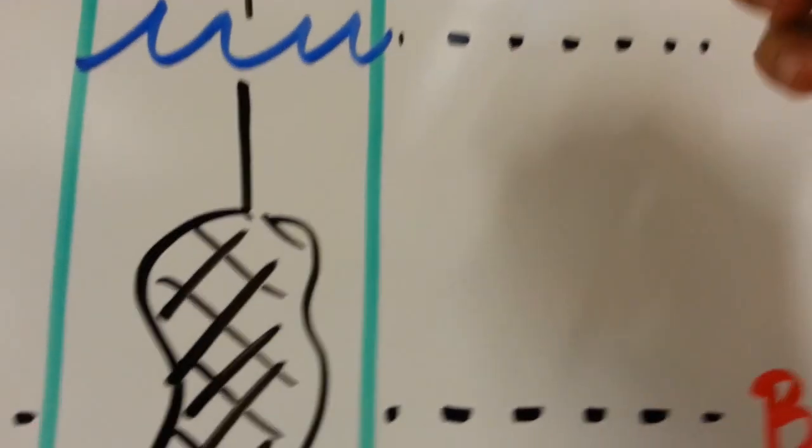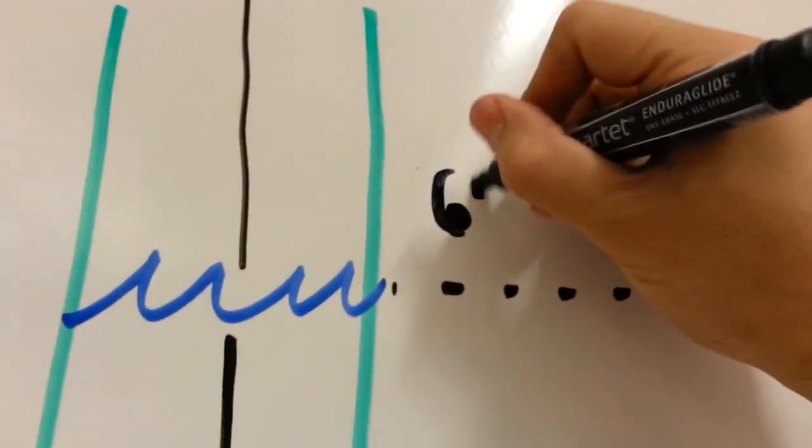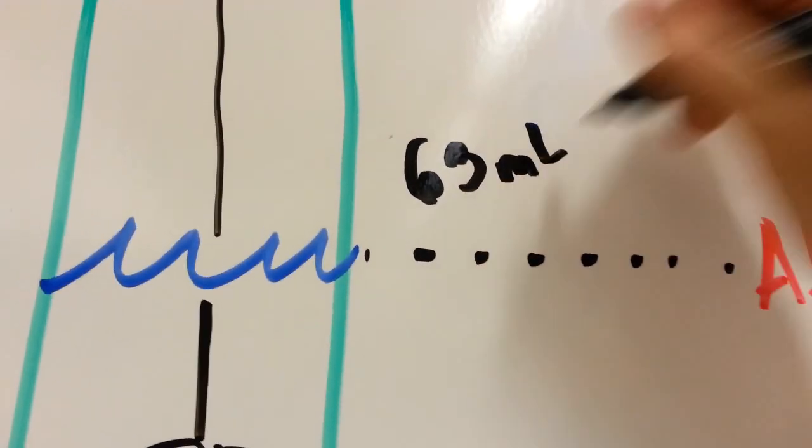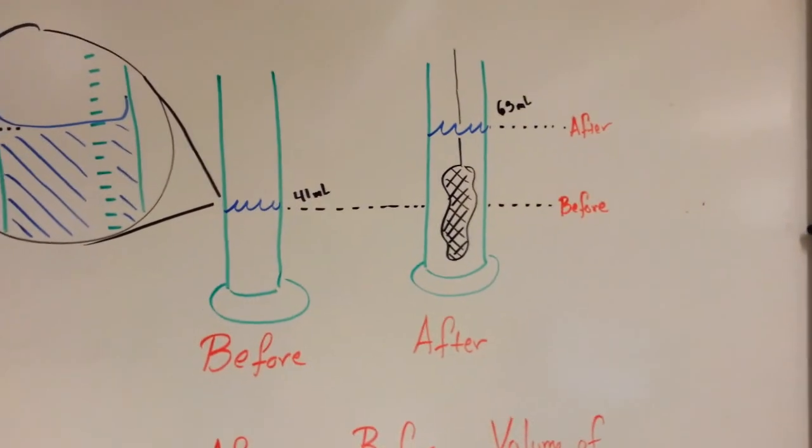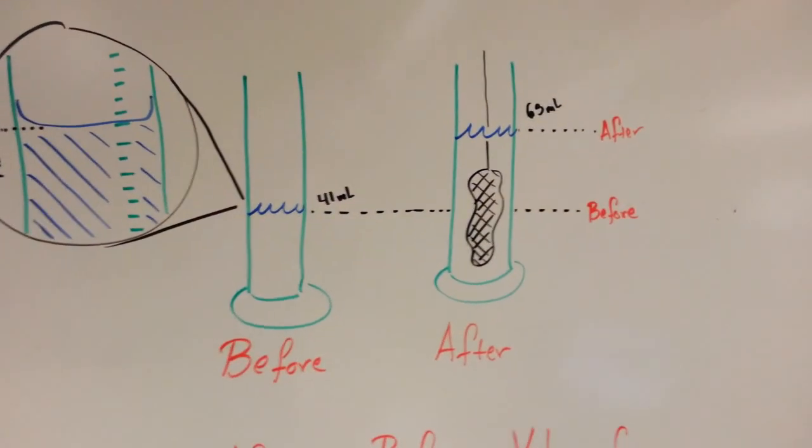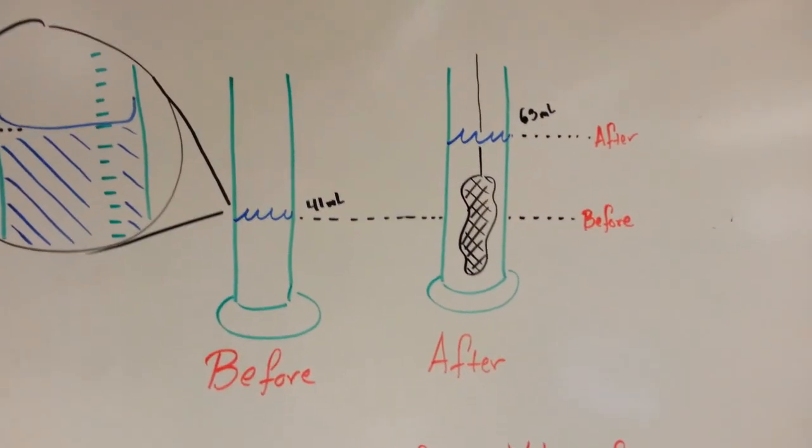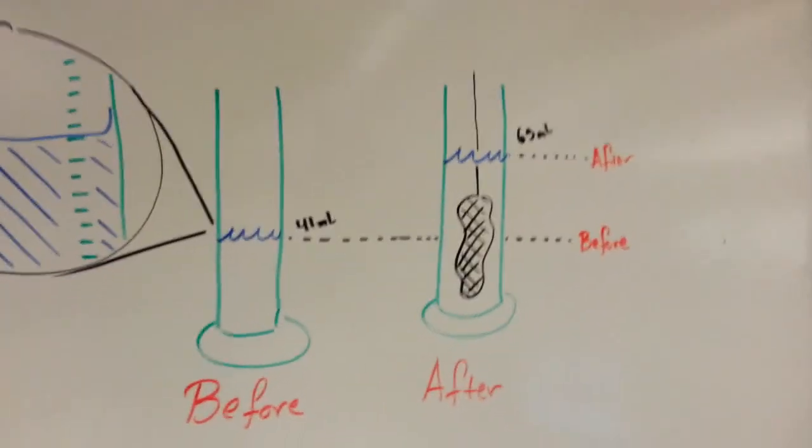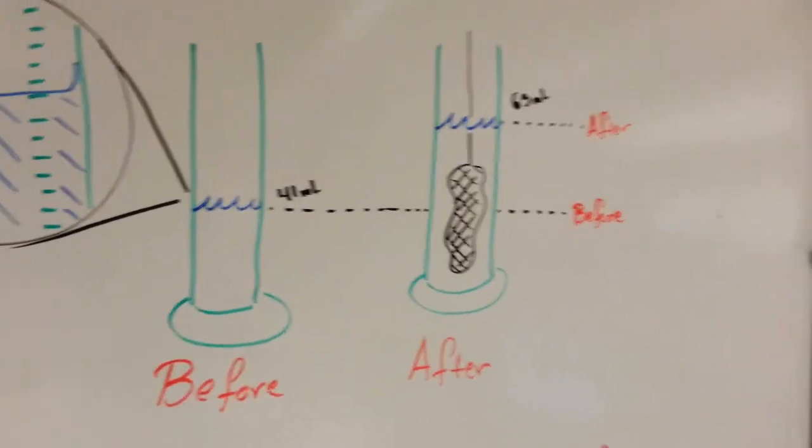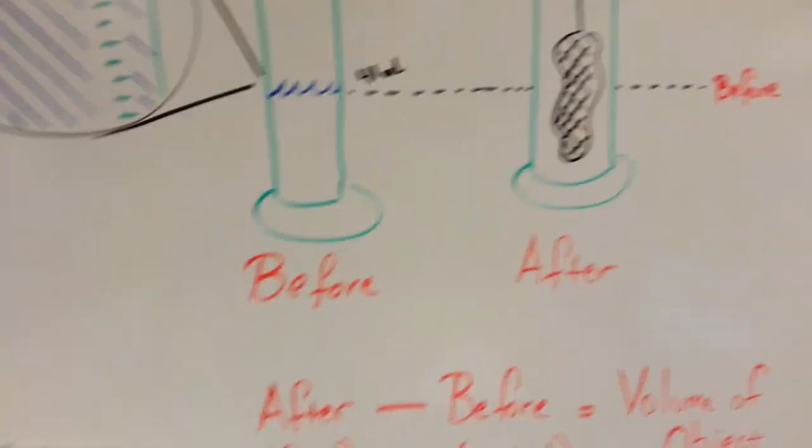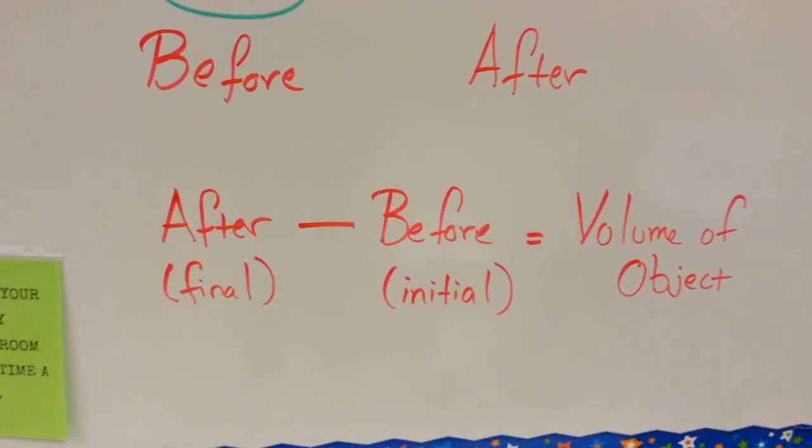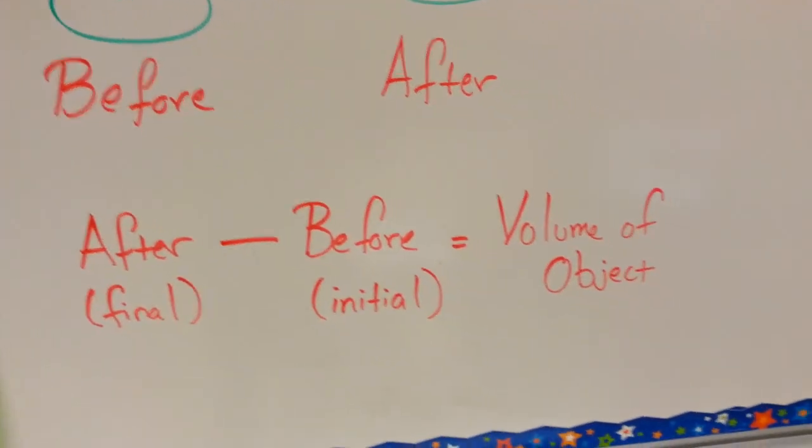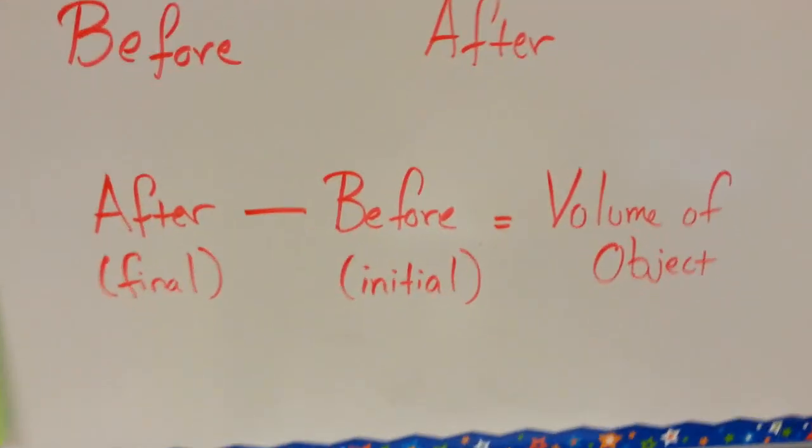So again, the new water level is about 63 milliliters. So I have a before and an after. So what I need to know now is how far the water went up. Because the same amount of water that got pushed up is the same amount of volume that the object has. So I'm going to use this formula: after the after measurement, subtract the before measurement, and that will give you the difference between the two or the volume of the object.